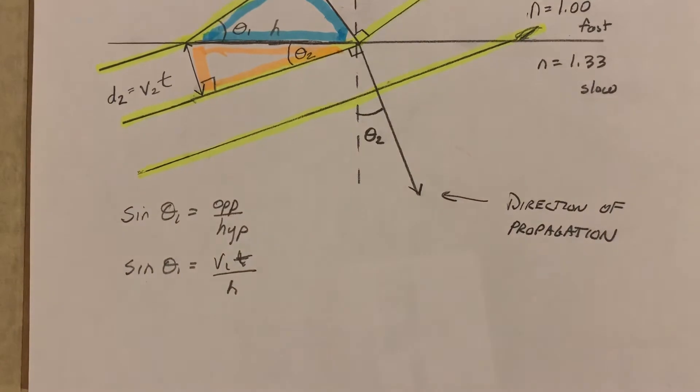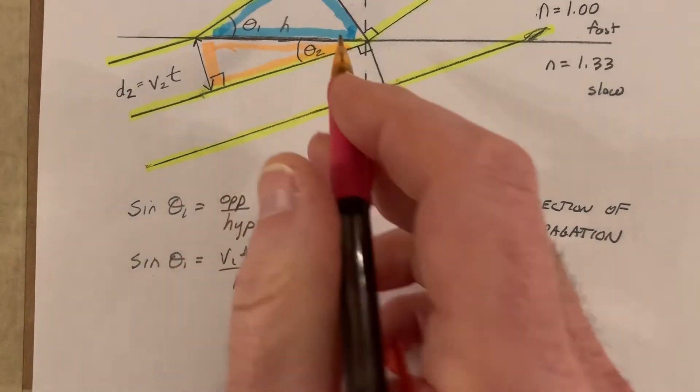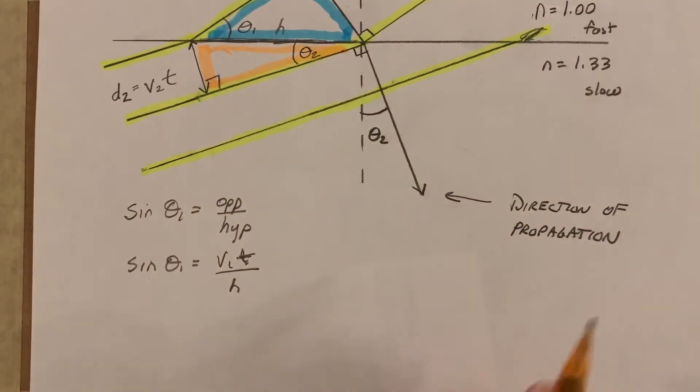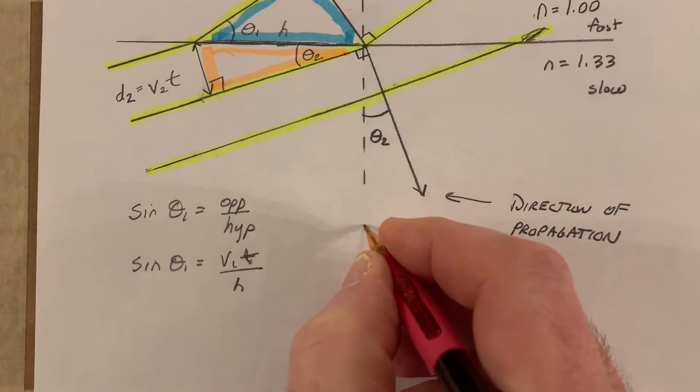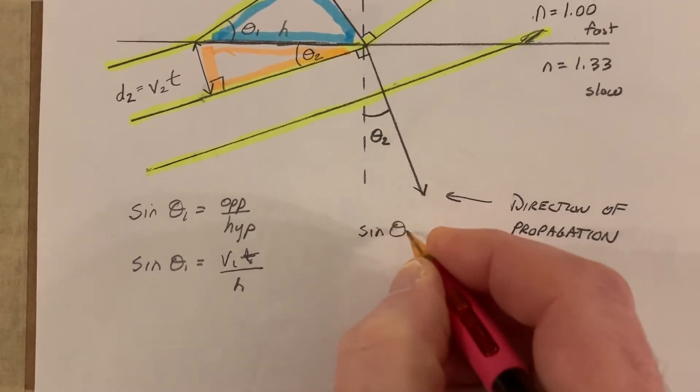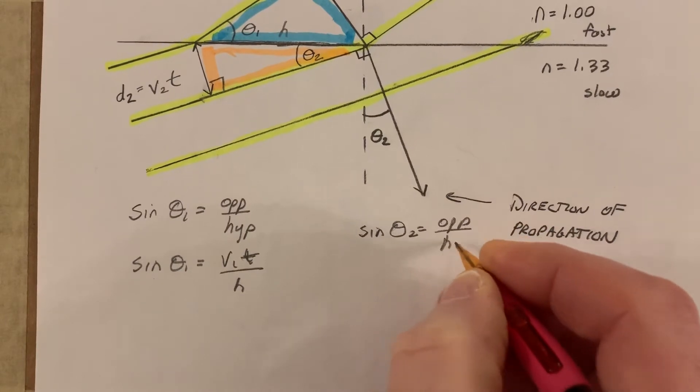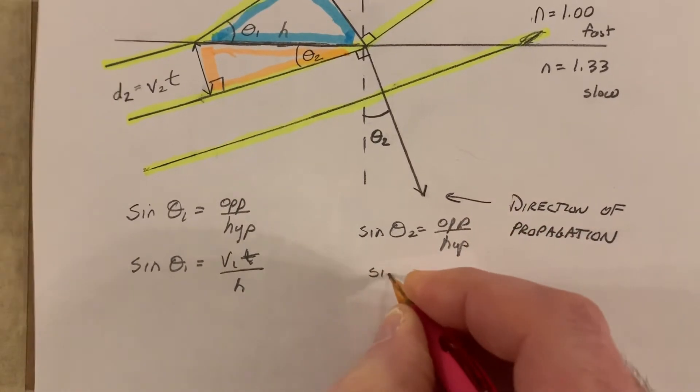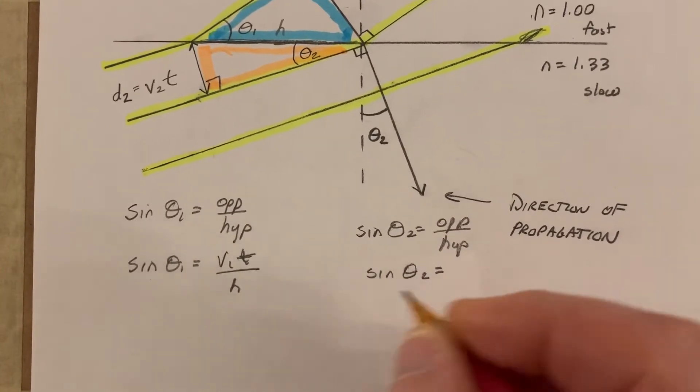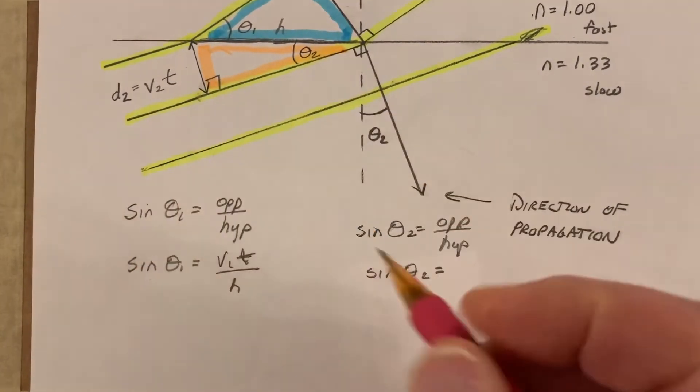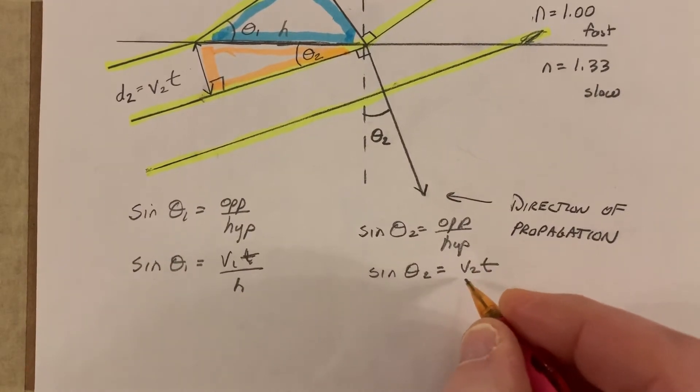There's my first one. Now, let's think about the next one, which is this theta 2 over here. Well, I'm going to do the same exact thing. Sine of theta 2 equals opposite over my hypotenuse. Sine of theta 2 is going to be equal to my opposite, which in this case, opposite that is my velocity 2 times my time, all divided by h.